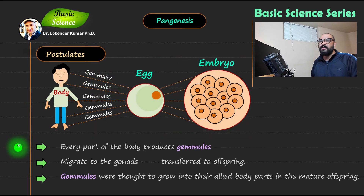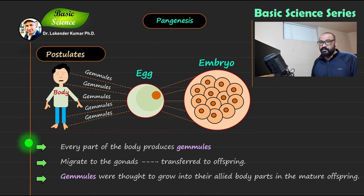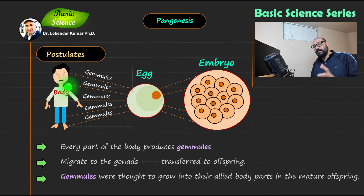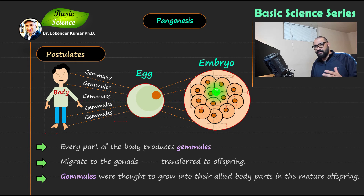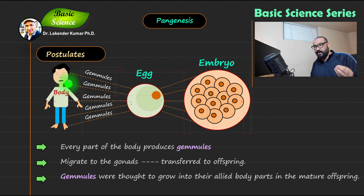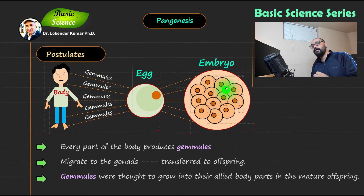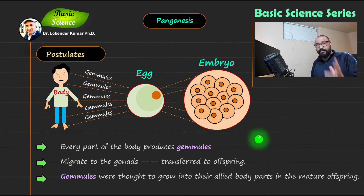The final point is that gamules were thought to grow into their allied body parts in the mature offspring. These gamules were responsible for carrying information from a specific part of the body in the parent, and each gamule was responsible for making that particular organ. This hypothesis was highly accepted and really famous at that particular time, though it was later rejected.